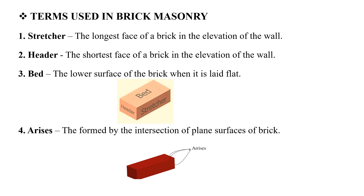The first term is stretcher. The stretcher is the longest face of the brick when it is laid to its full length and height. The second term is the bed or garden, which is the lower portion of a brick and could be a flat pavement surface.